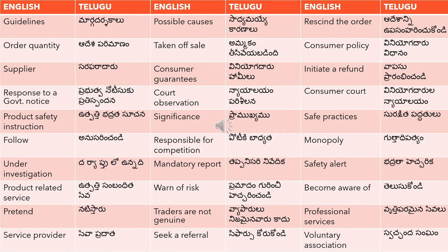'Rescind the order' or 'revoke the order' is translated as 'adesan upasamharinchakondi'. 'Order quantity' means 'adesan parimanu'. 'Taken off sale' means 'ammakovi teyyabadindi' — this item is no longer on sale.